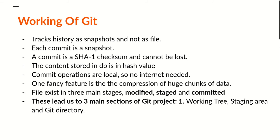The content stored in the database is in the form of a hash value. All the files and all the contents within the files are compressed into a hash value. The naming of commits — they don't have real names, but hash values are used to refer to the commits. We're going to interact with hash values going forward.